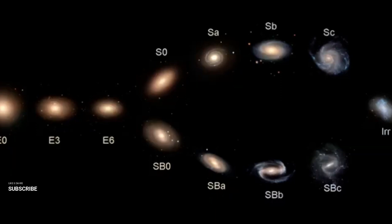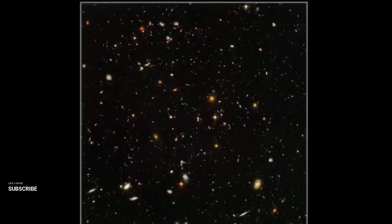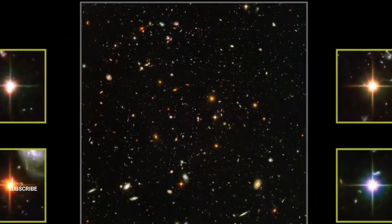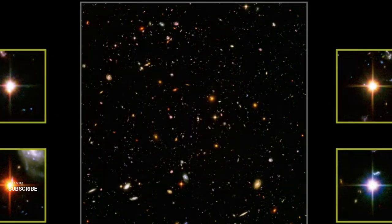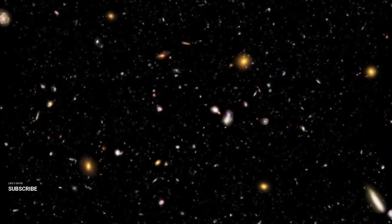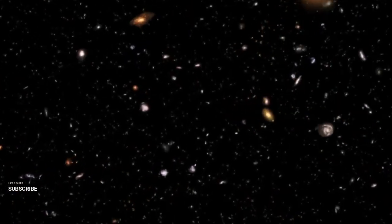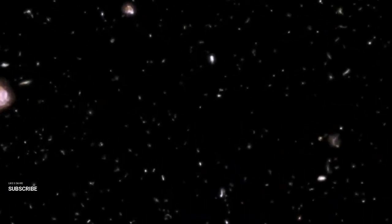The Hubble sequence, a classification system for galaxies, appears vastly different when looking back six billion years compared to what astronomers observe in the present day. Six billion years ago, the universe was populated with a significantly higher number of peculiar galaxies than we see now. This observation suggests that over the last six billion years, these unusual galaxies have transformed into the more familiar spiral galaxies. Astronomers theorized that these peculiar galaxies evolved into spirals predominantly through processes of collisions and mergers. While it was previously believed that galaxy mergers became substantially less frequent around eight billion years ago, this new evidence implies that mergers continued at a notable rate well after this period, possibly up until four billion years ago.